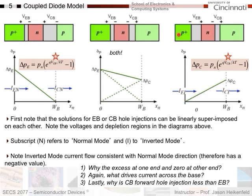One last question before we move on: what drives the current across the base? It's diffusion. I have a high concentration here and low concentration here — this concentration gradient drives the holes by diffusion. You can already see that if you try to forward bias both the emitter-base and the collector-base, you're going to eliminate that concentration gradient. The last thing to notice: why is delta P_E greater than delta P_C? The reason is that the emitter is heavily doped, so when you forward bias this junction you get more holes across because you have more holes to diffuse over, versus the collector side which is lightly doped — fewer holes to diffuse over when you forward bias that junction.